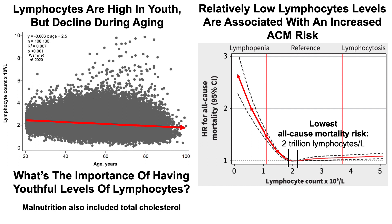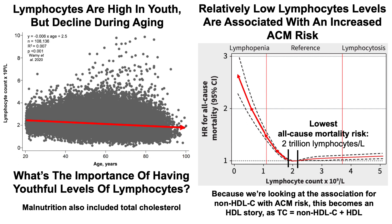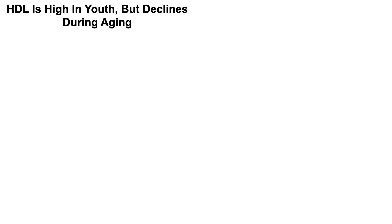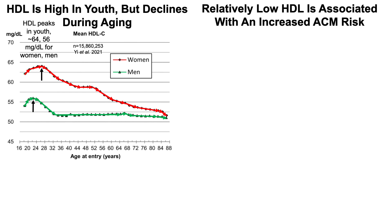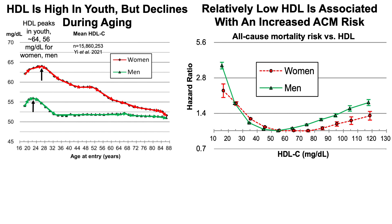Malnutrition also included total cholesterol. Because we're looking at the association for non-HDL cholesterol with all-cause mortality risk, this becomes an HDL story — total cholesterol equals non-HDL cholesterol plus HDL, making HDL the only factor not included in that model. HDL is also relatively high in youth but declines during aging: HDL peaks in youth at about 64 in women and 56 in men, then steadily declines for women, while for men there's a rapid decline into the 30s after which it's mostly stable in the low 50s. Relatively low HDL is also associated with an increased all-cause mortality risk, particularly for values less than 45 for men and less than 55 for women.